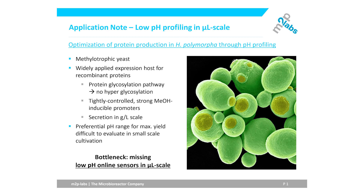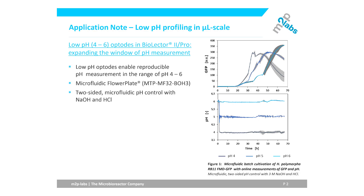Thus, some kind of a bottleneck evolved with respect to missing low pH online sensors in MTP-based microliter scale. However, in this application note, we demonstrate the use of a new low pH optode in BioLector Pro that expands the measurement window to a lower range of 4 to 6.